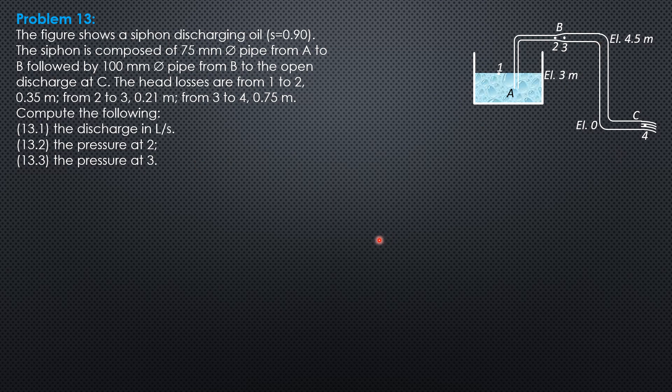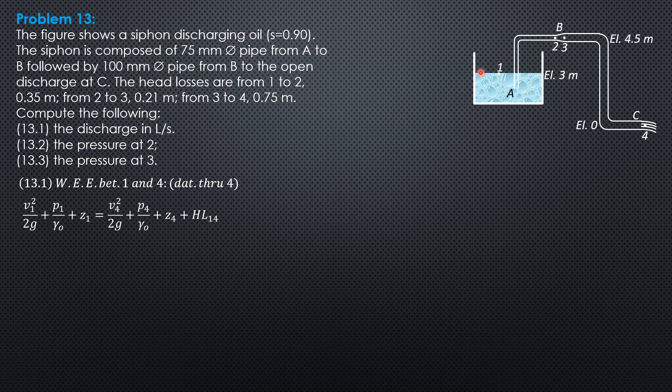This is the given figure. First, we write energy equation between 1 on the surface and 4, which is open to the atmosphere. We select the datum through 4 so that the elevation there is 0. Velocity head at 1, pressure head at 1, elevation head at 1 equals velocity head at 4, pressure head at 4, elevation head at 4 plus head loss from 1 to 4. Velocity head at 1 is 0, pressure head is 0 (exposed to the atmosphere), elevation head 3 equals velocity head at 4 (unknown), pressure head at 4 is 0, elevation head 0, then head loss 0.35 plus 0.21 plus 0.75.